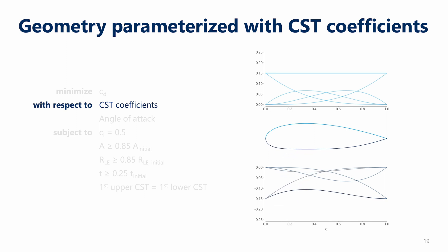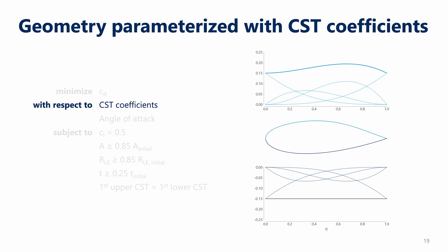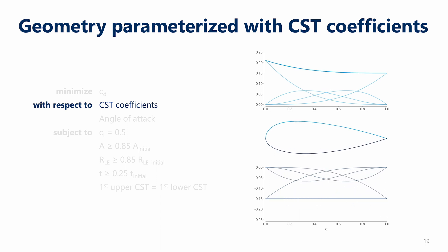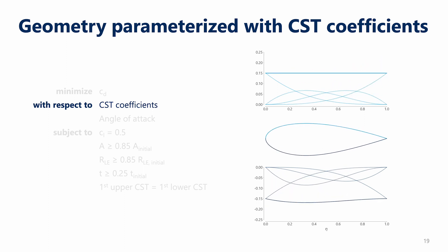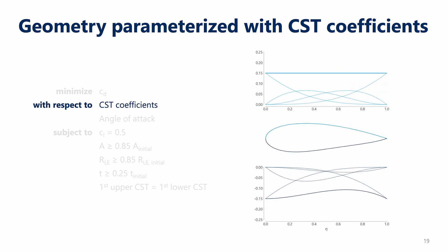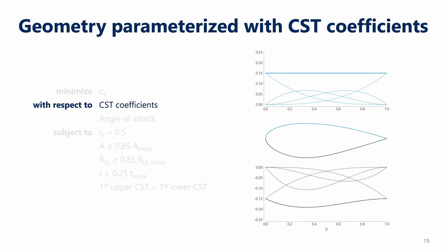CST coefficients work something like this: you start with a class shape — in this case a really thick airfoil — and then you scale the upper and lower surfaces independently with a scaling factor. That scaling factor is the sum of Bernstein polynomials, each weighted by a scalar value, and by changing those values we can change the shape of the airfoil. One thing to note: look at what happens when we change the polynomial associated with the leading edge of the airfoil. When we change that value, we end up with something like a kink at the leading edge — a C2 discontinuity — and that's associated with the last constraint in the optimization problem.